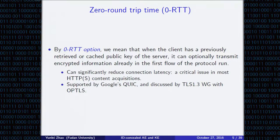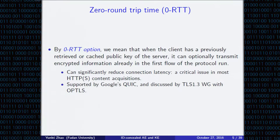By zero RTT option, we mean that the client can optionally transmit encrypted messages already in the first flow of the session run, if it can retrieve or cache the public key of the server from previous communication. Zero RTT can significantly reduce the connection latency, which is a critical issue in most HTTP content acquisitions. Zero RTT is also supported by Google's QUIC and was discussed by the TLS 1.3 working group with OPTS since its sixth draft version.